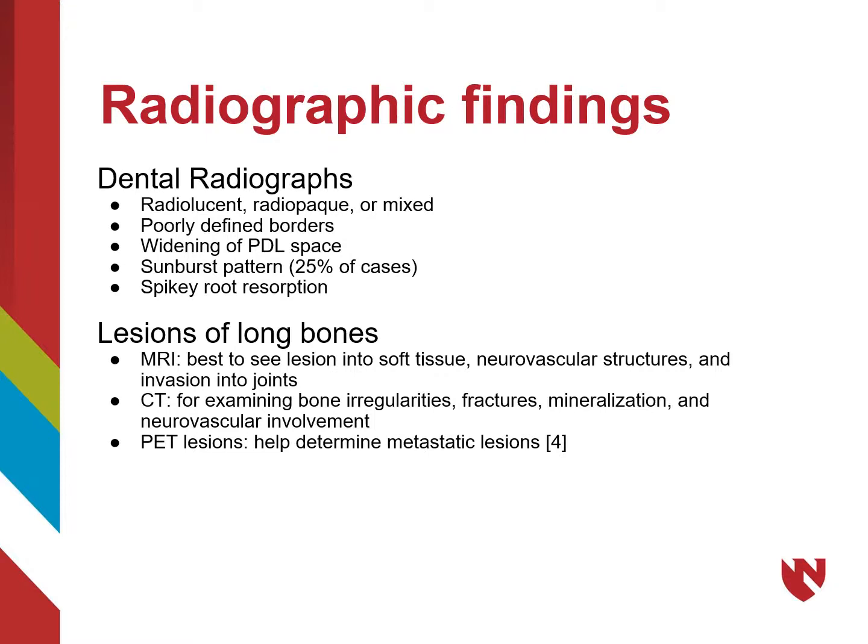In lesions of the long bones, MRIs are best to visualize the lesion into soft tissue, neurovascular structures, and invasion into joints. CTs can be used for examining bone irregularities, fractures, mineralization patterns, and neurovascular involvement. PET scans can be helpful for determining metastatic lesions.